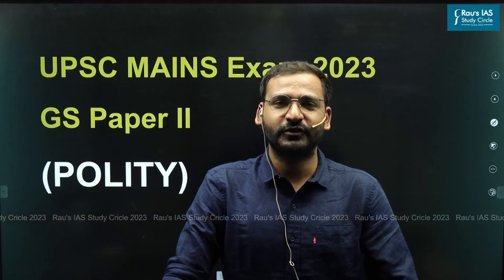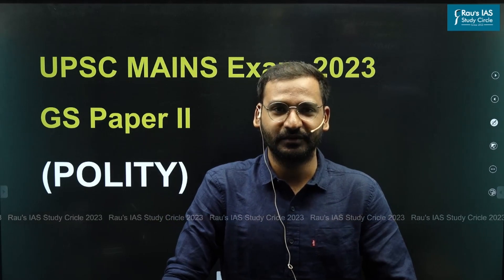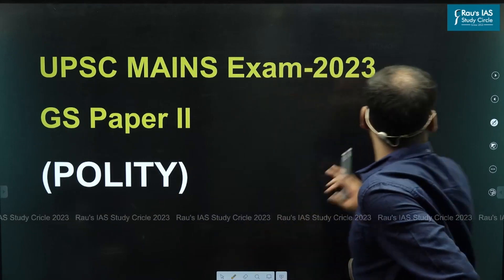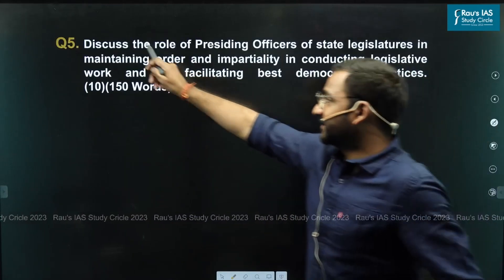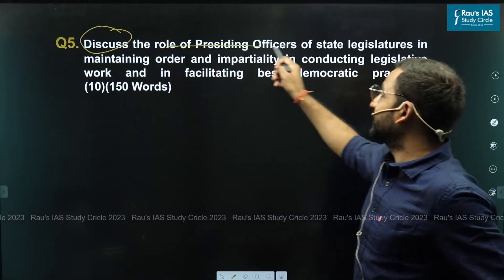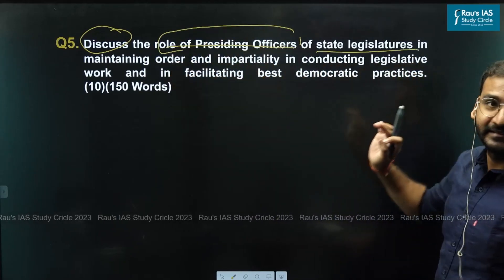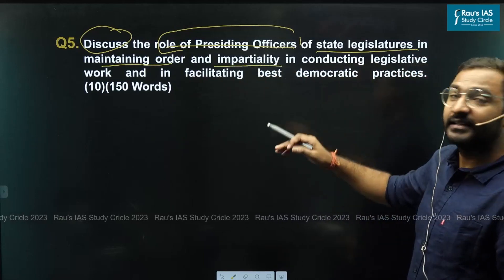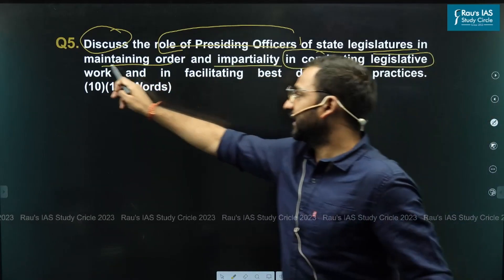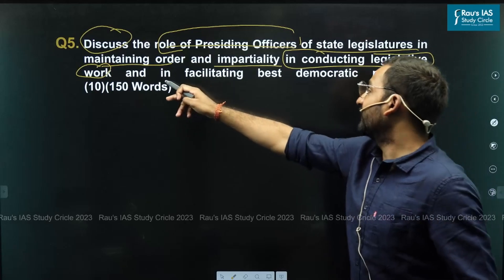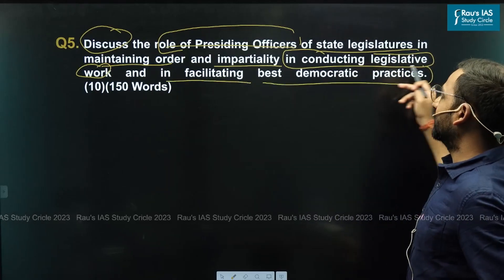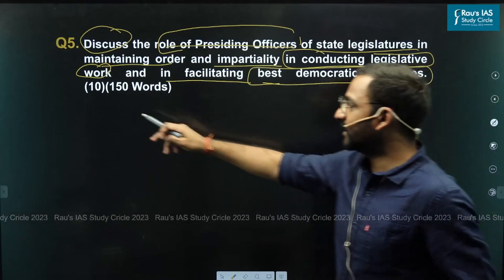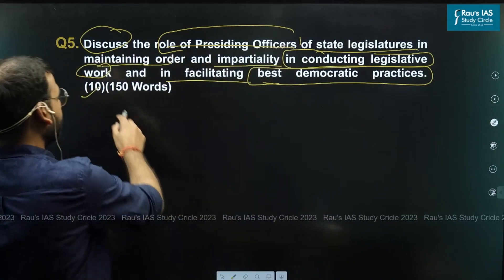Hello everyone. In this video we are going to discuss question number 5, which was asked in GS paper 2 of civil services mains examination 2023. The question was: discuss the role of presiding officers of state legislature in maintaining order and impartiality in conducting legislative work and in facilitating best democratic practices. The question was asked for 10 marks and the answer should be given in 150 words.